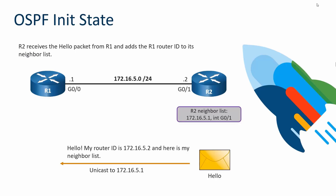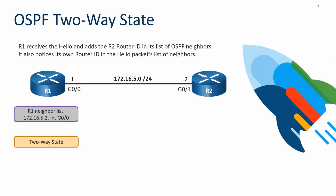R2 adds information into its message indicating it has a new neighbor — R1, with IP address 172.16.5.1, off its interface Gig0/1. When R2 sends its Hello back as a unicast targeting R1's IP, R1 receives that Hello and sees itself in R2's neighbor list. Since R1 sees its own router ID in R2's neighbor list, it transitions to the Two-Way state.